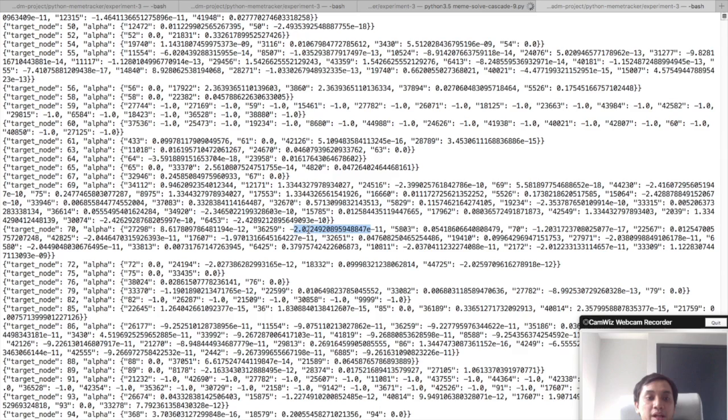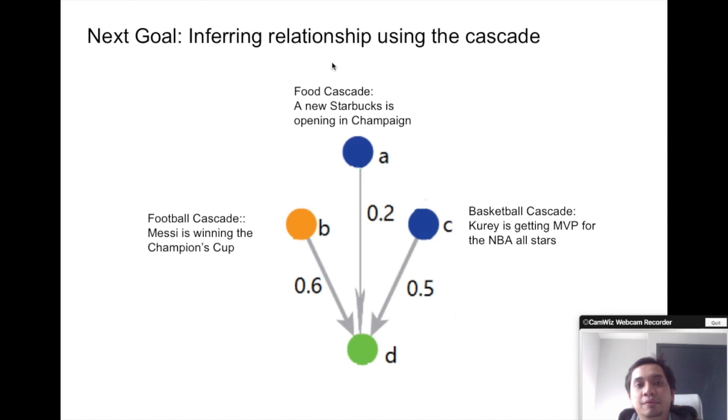Our next goal is to overcome the false negative prediction from our NetTRAP problem using topic modeling. Within all the cascades, we can infer topics about the cascade.